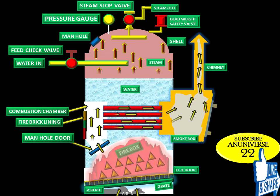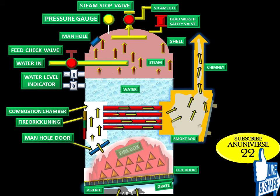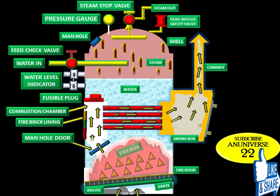The pressure gauge indicates the pressure of the steam inside the boiler. The water level indicator shows the water level in the boiler, which should not fall below a particular level; otherwise the boiler will be overheated and the tubes may burn out. The fusible plug extinguishes the fire in the furnace when the water level falls below the safe limit, thereby preventing the boiler from explosion as a result of overheating of the firebox and fire tubes.